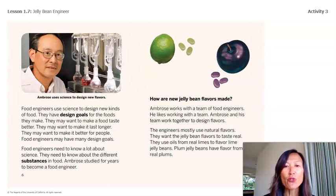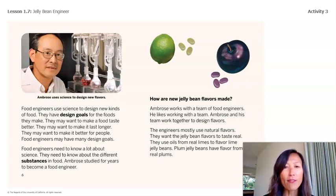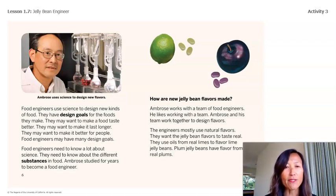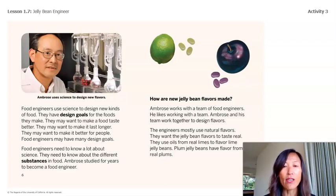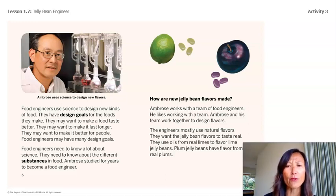Food engineers use science to design new kinds of food. They have design goals for the foods they make — they may want to make the food taste better, last longer, or be better for people. Food engineers need to know a lot about science and about the different substances in food. Ambrose studied for years to become a food engineer. So what kinds of things do food engineers need to know to design new jelly beans?